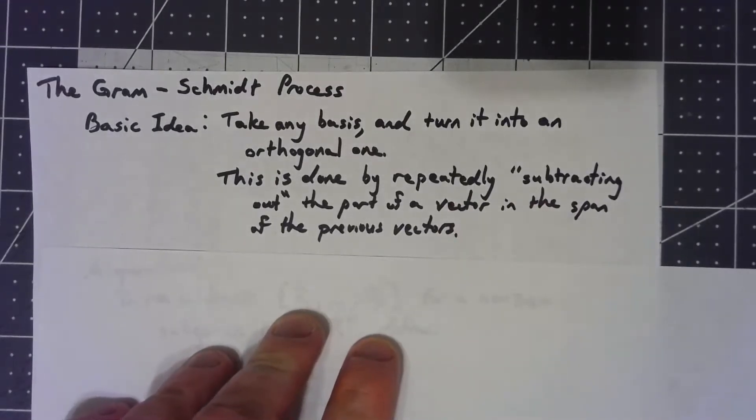We've said that having an orthogonal basis is really nice. There are all sorts of nice things we can do if we have an orthogonal basis. So the goal of the Gram-Schmidt process is to take any basis and turn it into an orthogonal basis for the same thing.